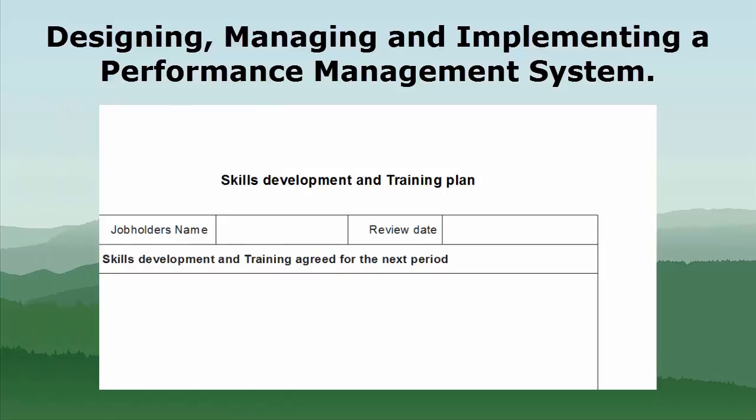And then we do the skills development and training plan. So we make a note of what has been agreed for the next period. That is very useful for whoever is putting together the development and training plans across the company, to concentrate on that and come up with a plan that enables everyone to have the skills and development that they need. So I hope those downloads are helpful. That's it for today — see you again in part six.